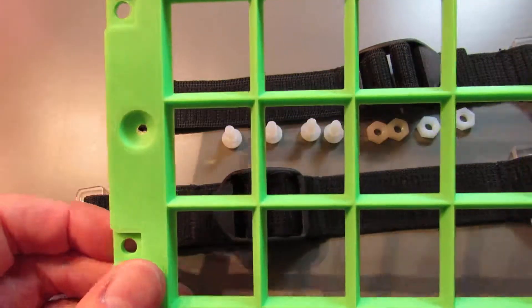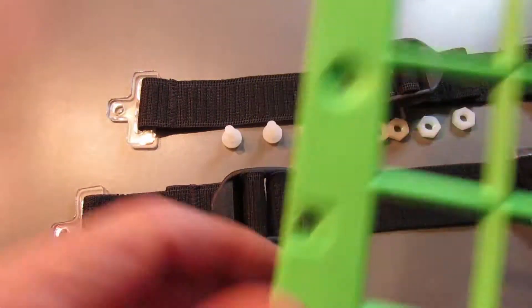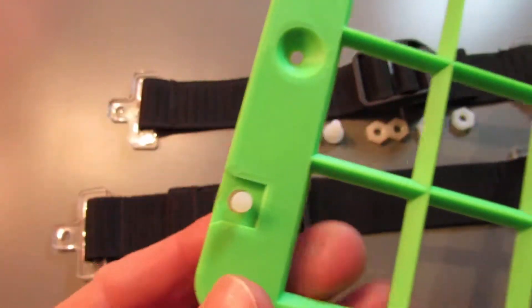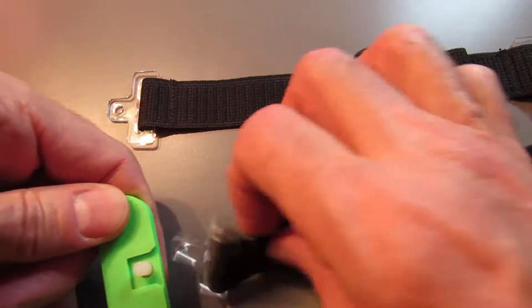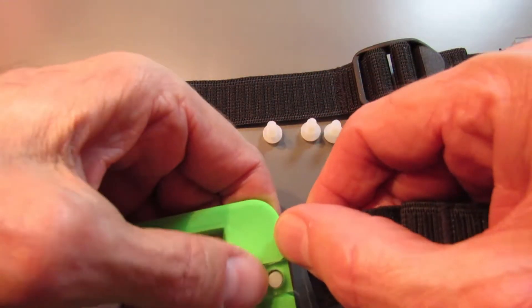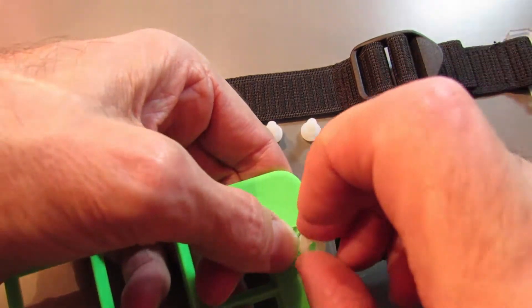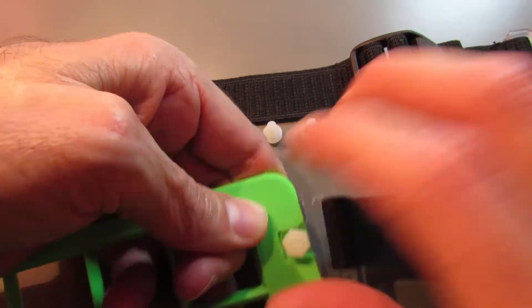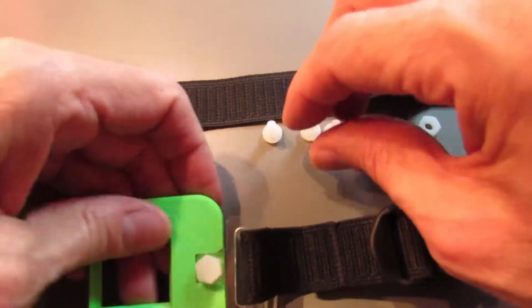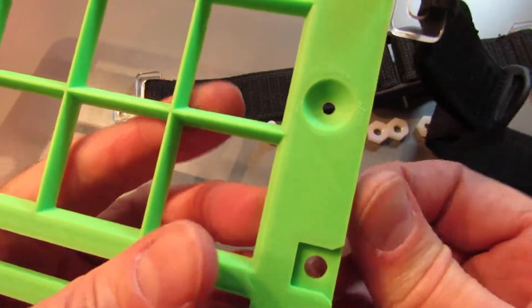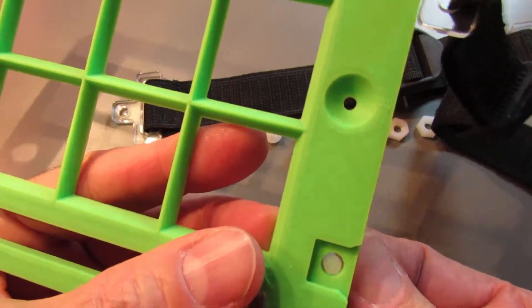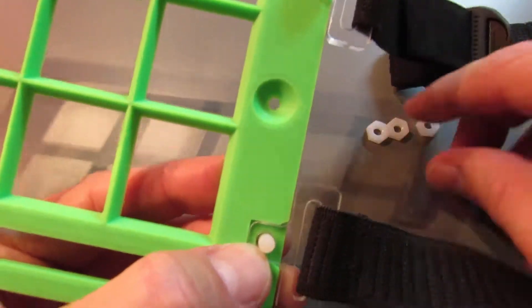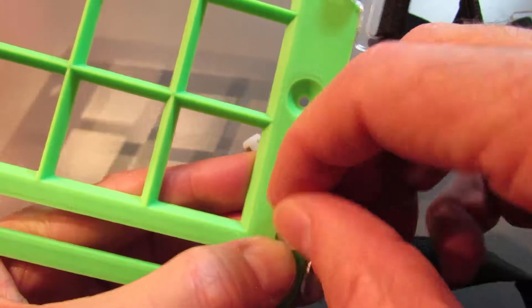So the way you assemble this is you take each screw and put it up through the bottom of the key guard, put the strap end in place, and then you put the nut on top. Finger tight's plenty. And repeat for all four of the holes.